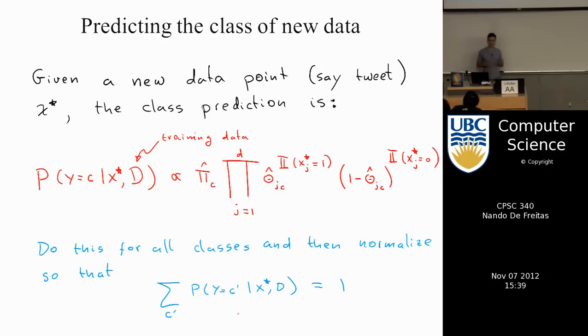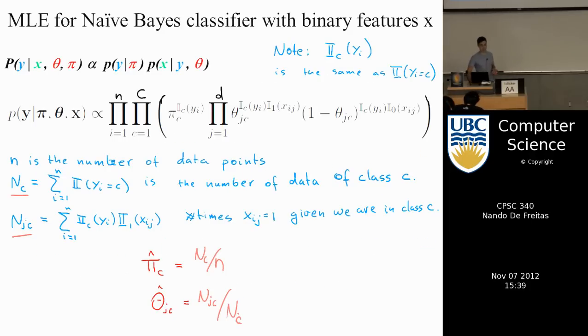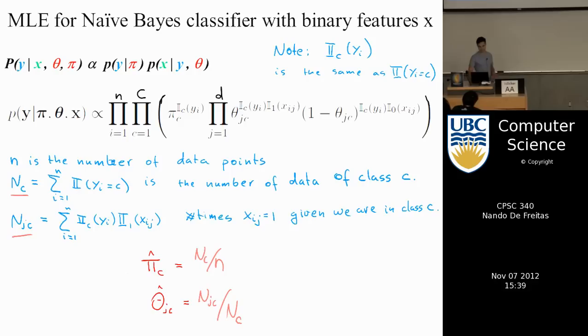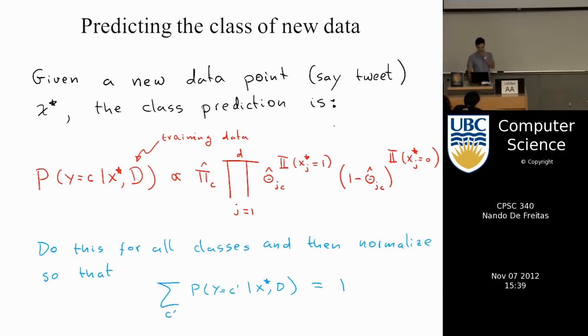We will derive this, but first I wanted to start with some intuition. If we want to make predictions, let's assume we've got these estimates. Once you have these estimates, you're done. And this will be the maximum likelihood estimates, by the way. Sort of ruined the surprise.